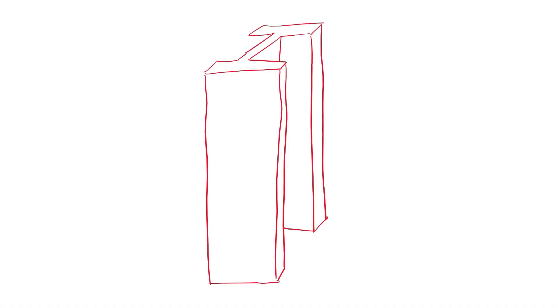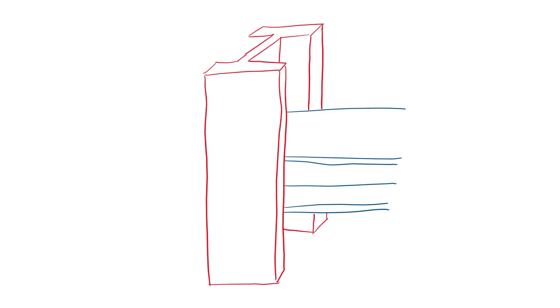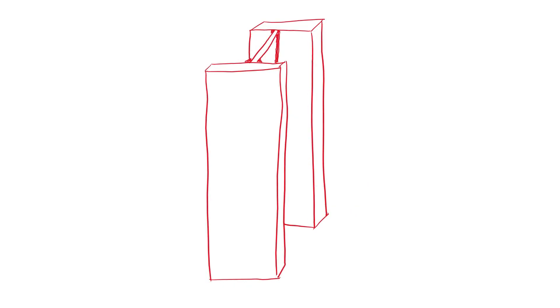W sections are some of the most commonly used structural steel sections as beams and columns. How would we go about designing W sections as columns? What is the fastest way available? How would that be different if the column was braced, and how would it be different if the section is built up and has slender elements? All of this will be clear by the end of this video.